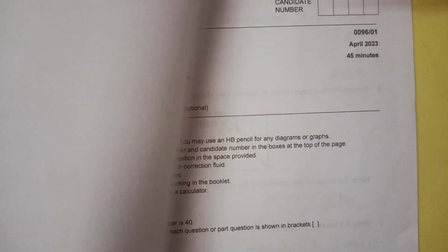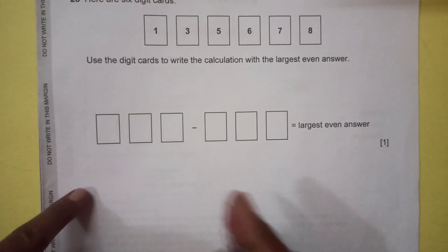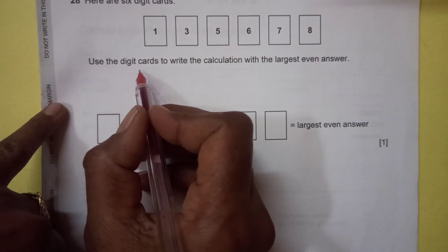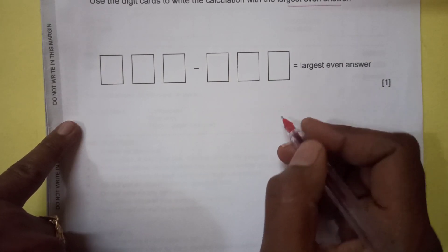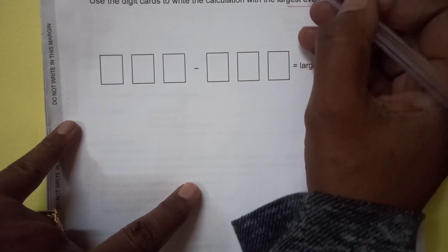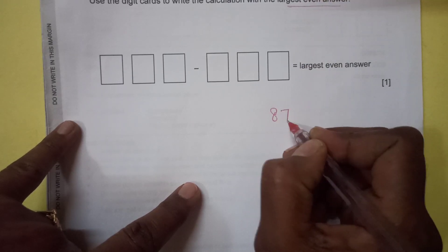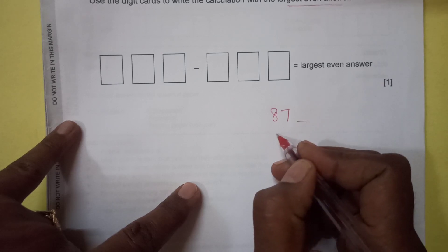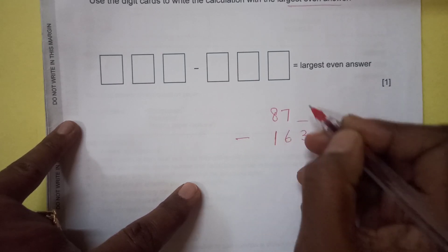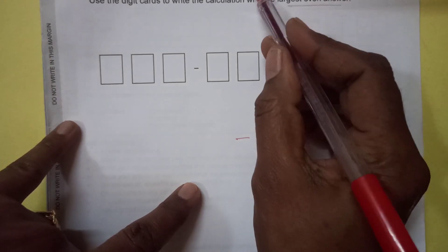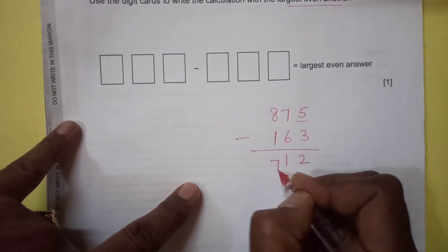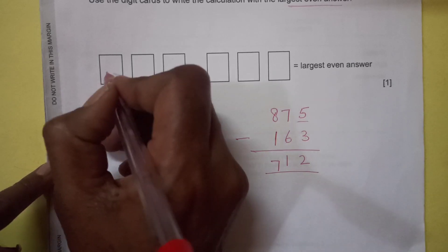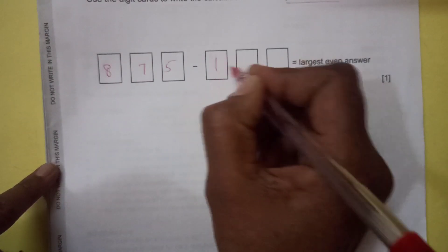Now, here we have another question, number 28. Here are 6 digit cards given to us. Use the digit cards to write the calculation with the largest even answer. You can use trial and error method here. Largest even answer, that means we need to have the largest numbers here, 7, 8. If I take 8, 7, then we can have the smallest number here, 163. We can't take the even number, 6 cannot be in the first number because the answer is supposed to be even. When you do this, this becomes the largest even number. So 8, 7, 5 and 1, 6, 3.